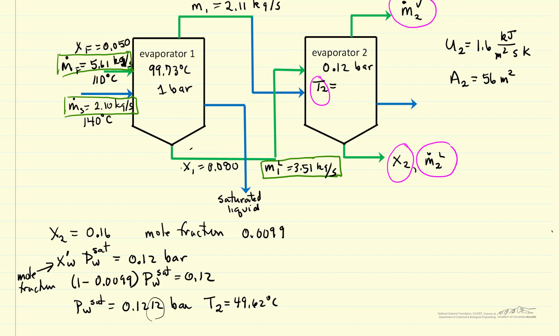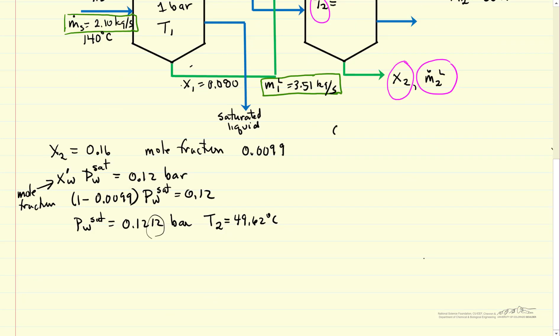So the rate of heat transfer in the second effect is going to be the temperature difference between temperature in evaporator one, T1 at 99.73 degrees. That's the temperature of the liquid that's leaving and going into the evaporator. It's also the temperature of the vapor that's leaving, and that's what's used to heat up the liquid in the evaporator. So we can write down the rate of heat transfer as the heat transfer coefficient, the area, the high temperature T1, the low temperature T2. I can substitute these values in and calculate Q2.